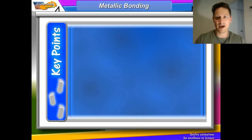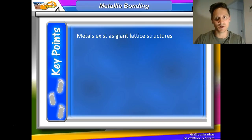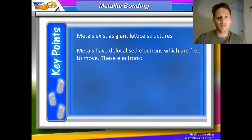The first slide is to talk about metallic bonding. The key points here are that metals exist as giant lattice structures. A lattice structure contains lots and lots of metallic atoms, and they're all connected together. Now metals have delocalized electrons.